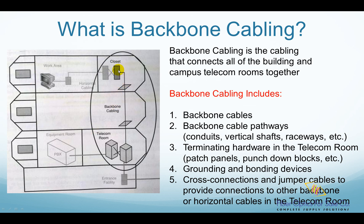This picture clearly shows what parts backbone cabling covers. It includes the backbone cables such as twisted pair copper cables and fiber optic cables. The backbone cable pathways support and distribute backbone cables, using conduits, vertical shafts, raceway, etc. The terminating hardware in the telecom room includes patch panels, punch down blocks, etc. It also includes grounding and bonding devices to ground the backbone cables that have metallic parts, and cross connections and jumper cables to provide connections to other backbone or horizontal cables in the telecom room.